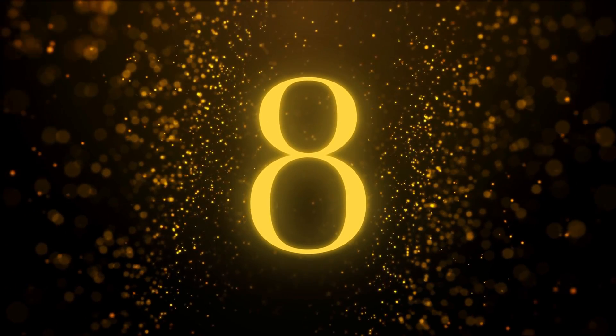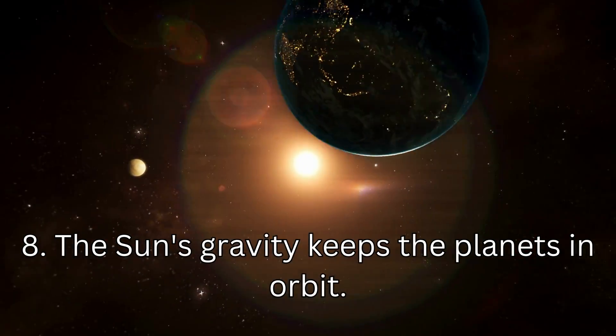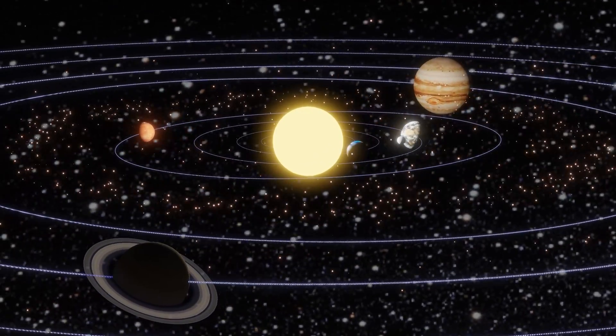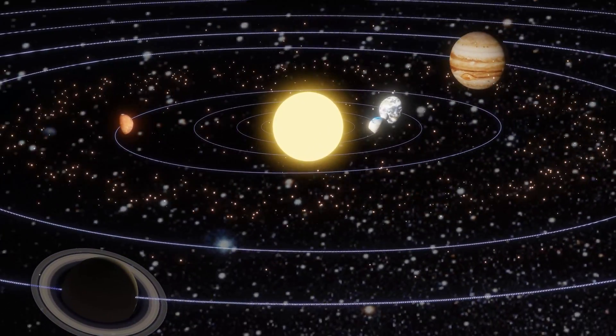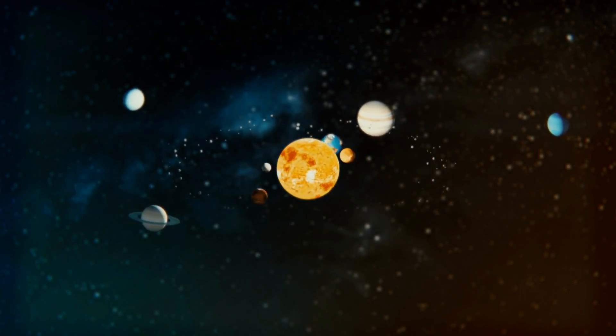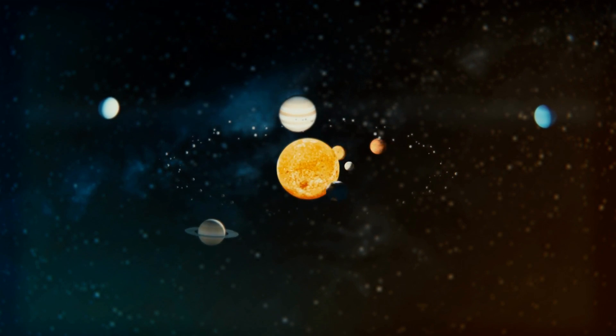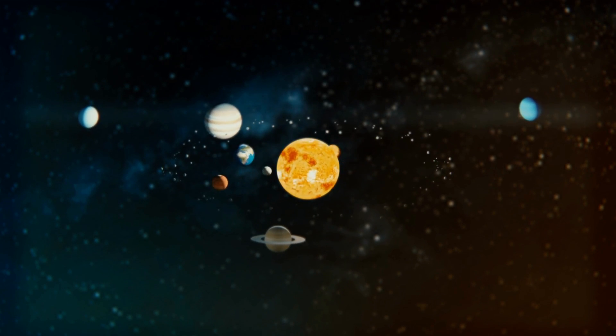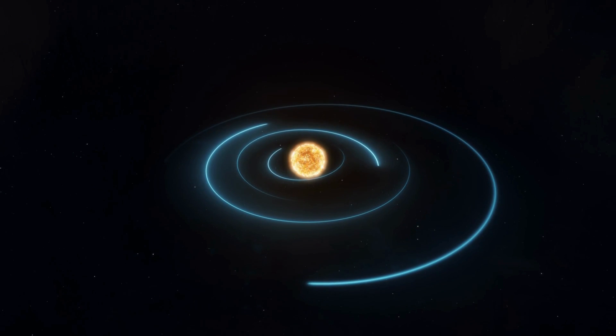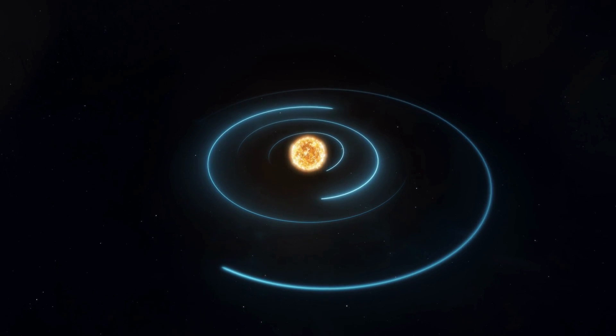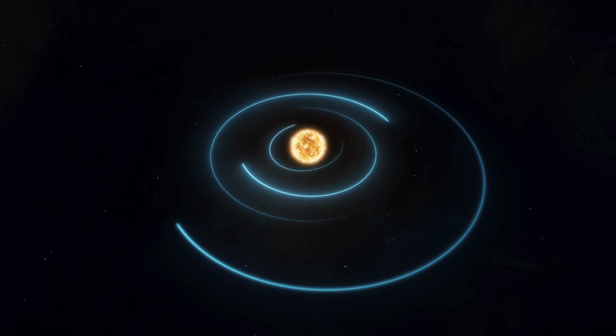Interesting Fact Number 8: The Sun's Gravity Keeps the Planets in Orbit. The Sun's massive gravity keeps the solar system together, keeping everything from the biggest planet to the smallest bits of debris in orbit around it. Without the Sun's gravitational pull, the planets would fly off into space.